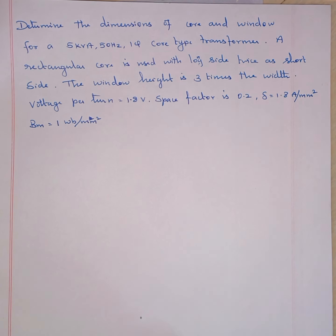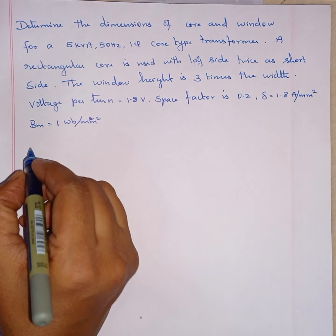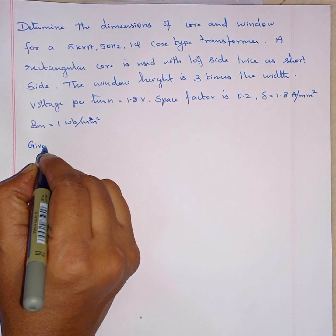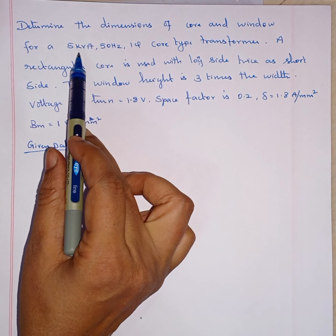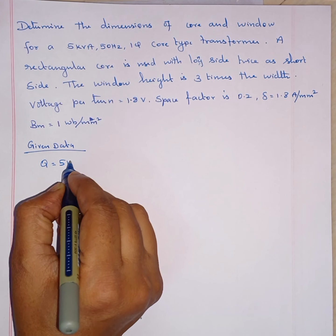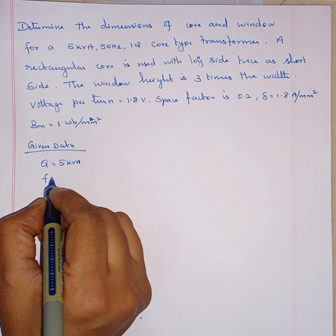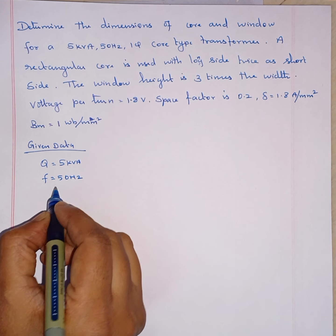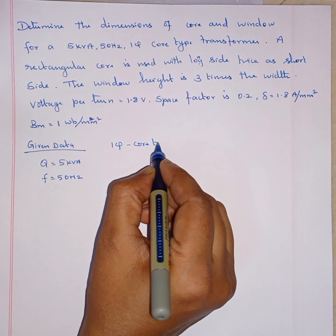Good morning students. Today we are going to discuss the dimensions of core and window of a transformer. First we will write the given data. The given data: Q is equal to 5 kVA, frequency is equal to 50 hertz, and it is a single phase core type transformer.